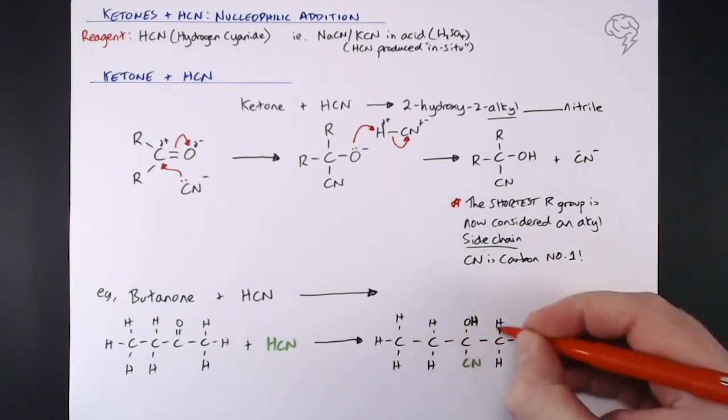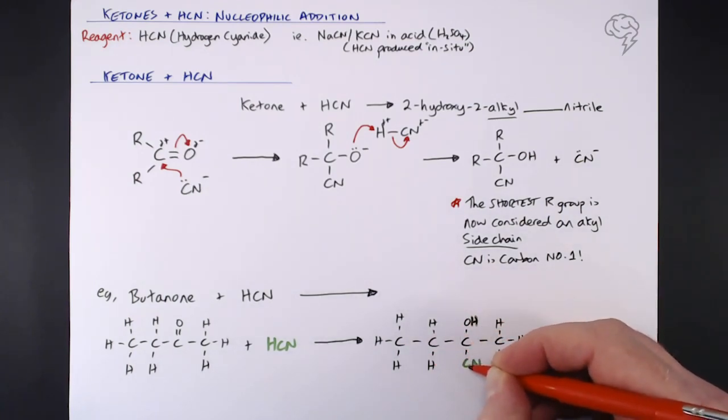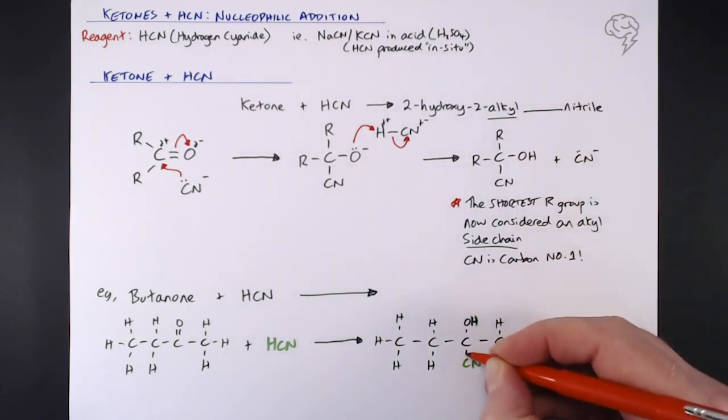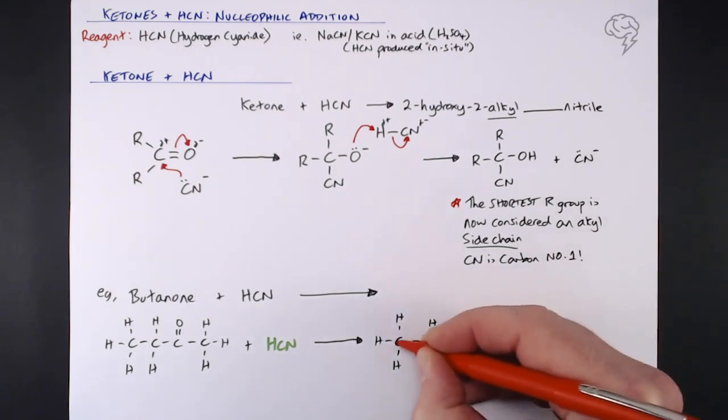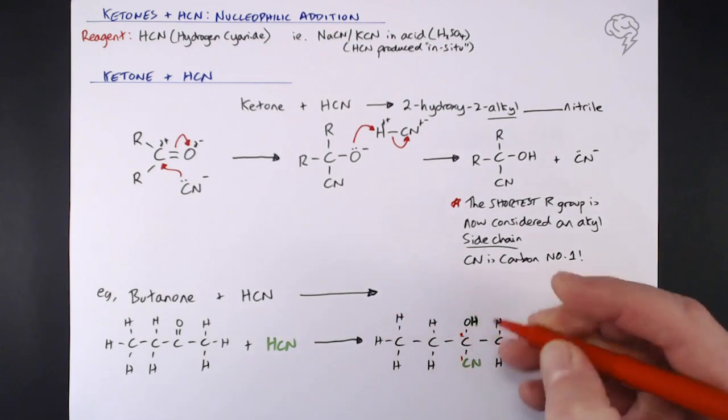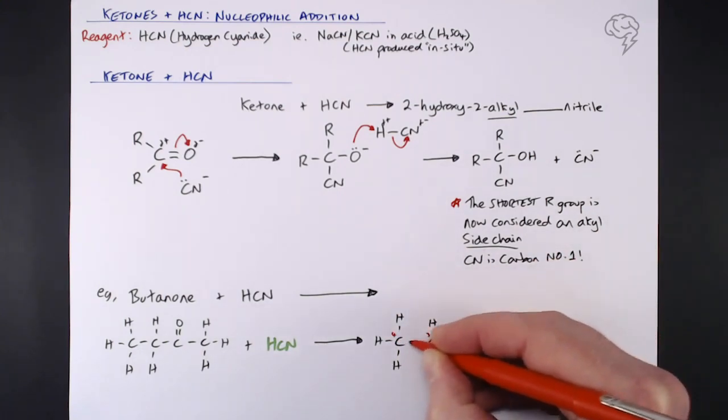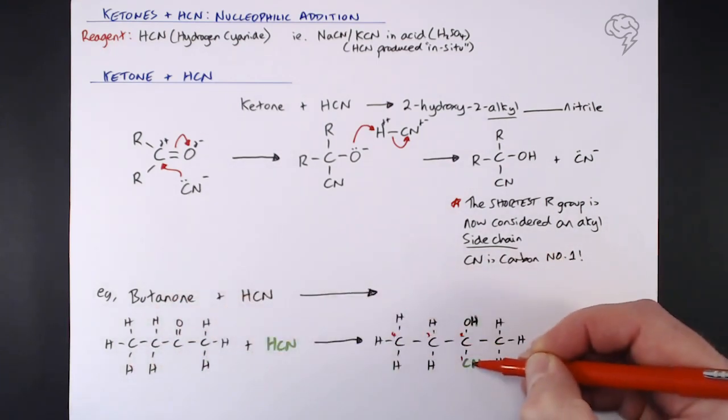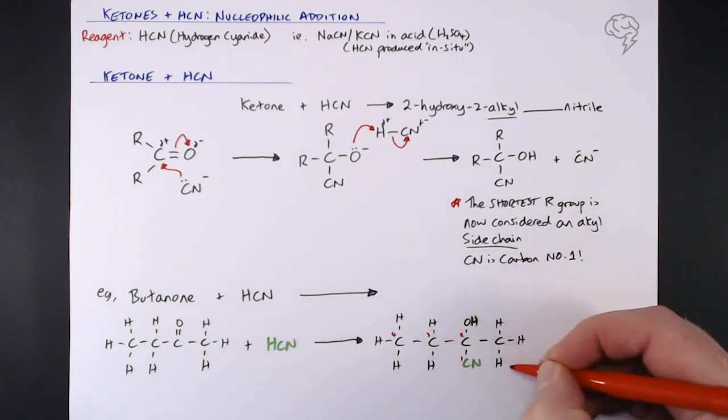This must be carbon number one, forming this part here. This is the longest chain out of the two directions we can take, so one, two, three, four - this is butanenitrile. We don't actually have any change in this example in terms of the main carbon chain length.